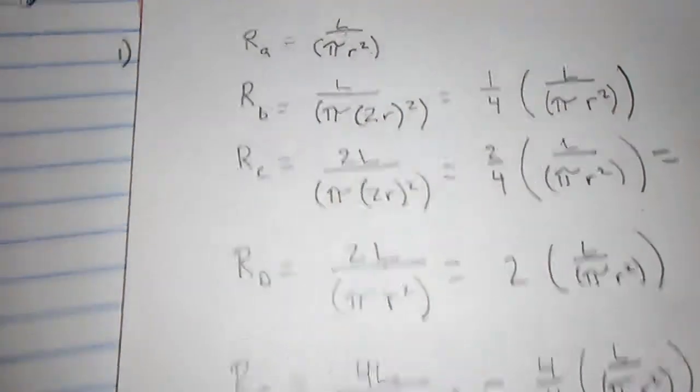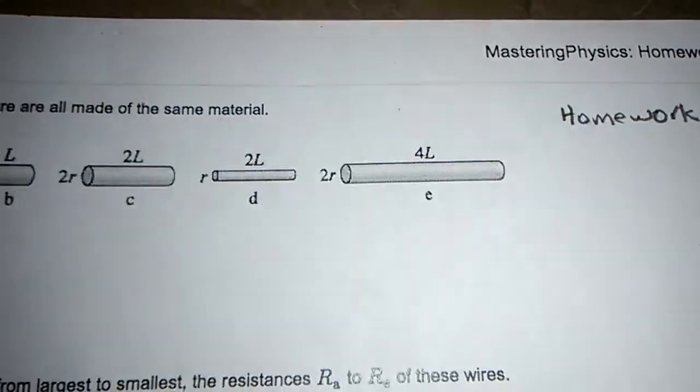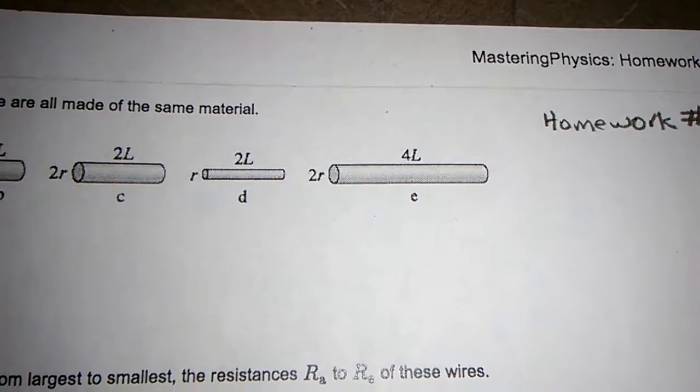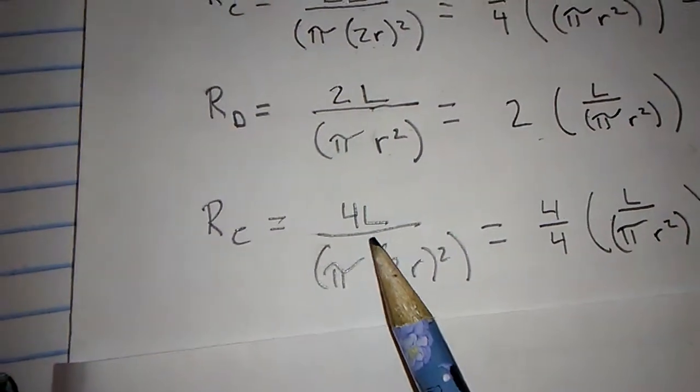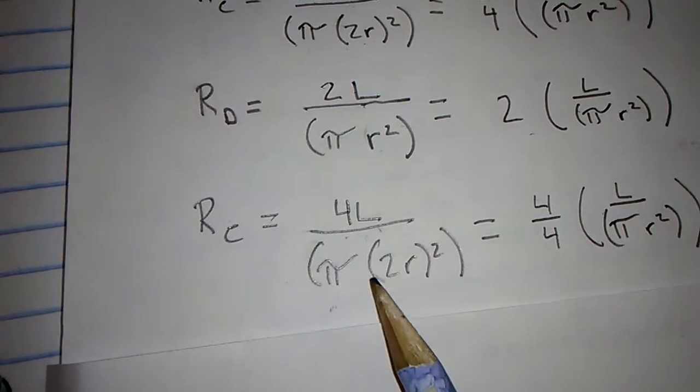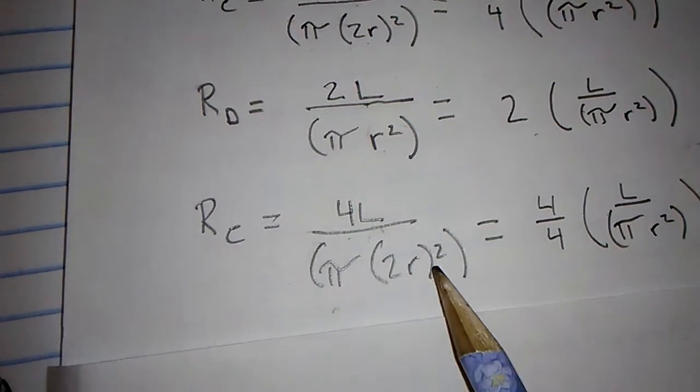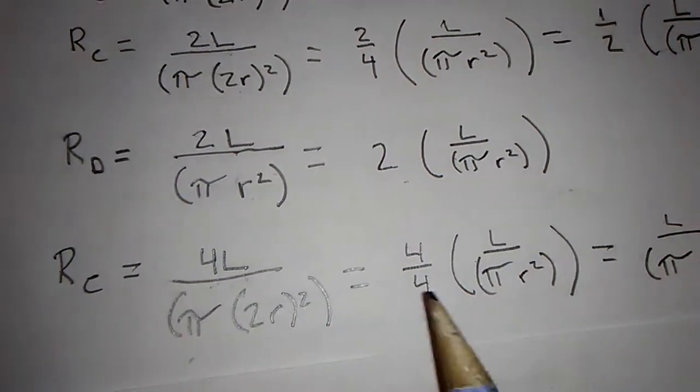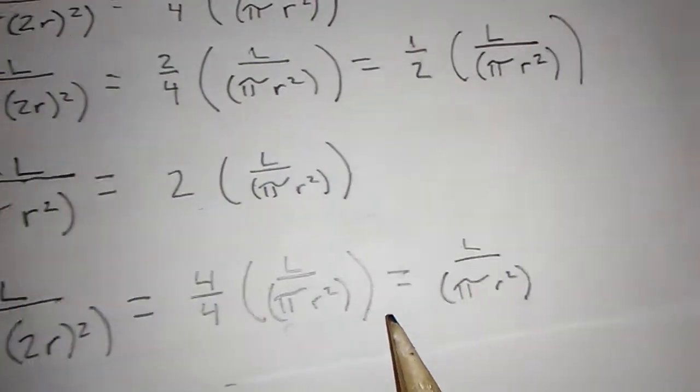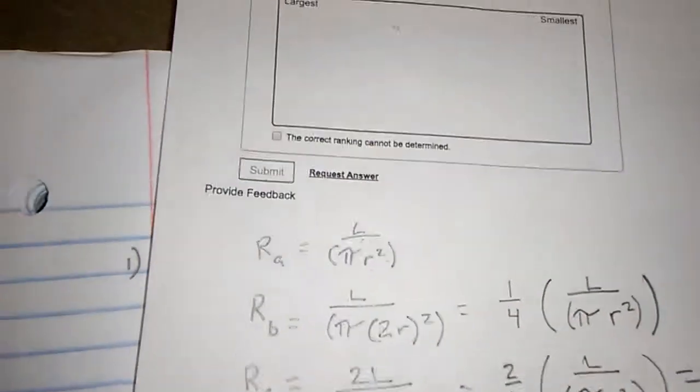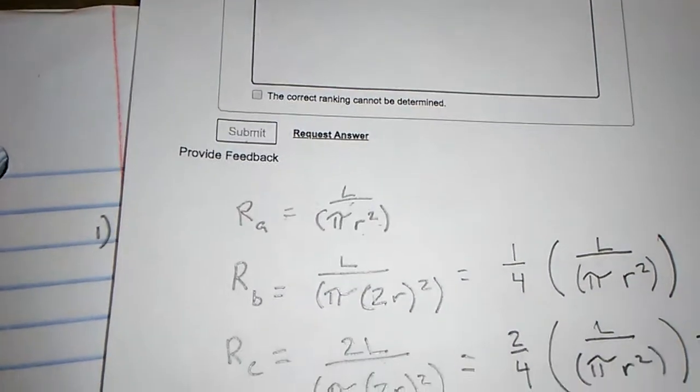Now the final one, wire E. That one has a length of four and a radius two. We'll go length of four divided by pi, two R squared. We could just go ahead and move the four and the two squared. So we're just going to get the original one. So E and A are going to be the same resistance.